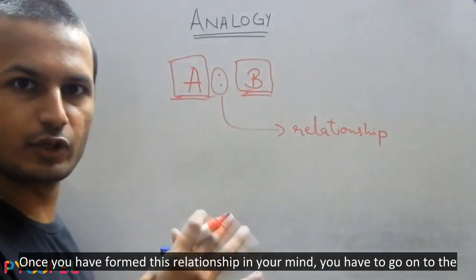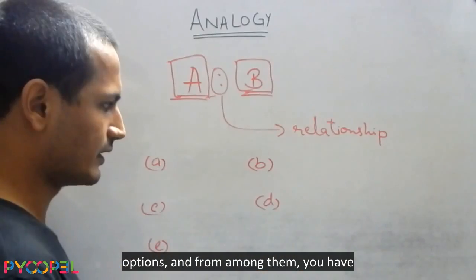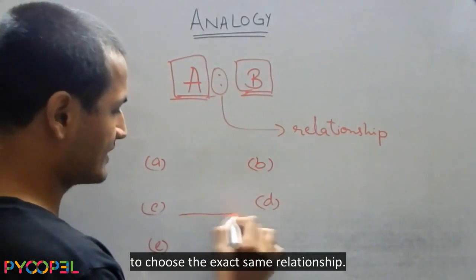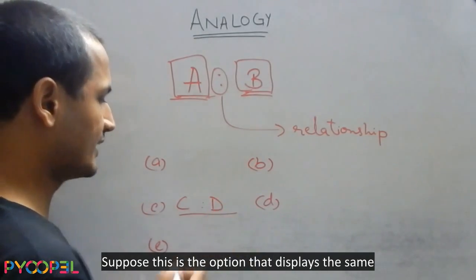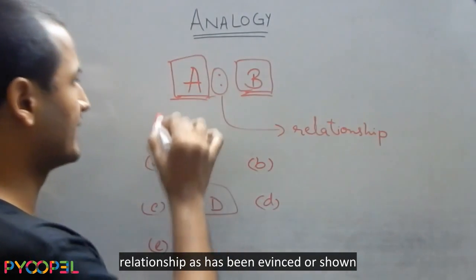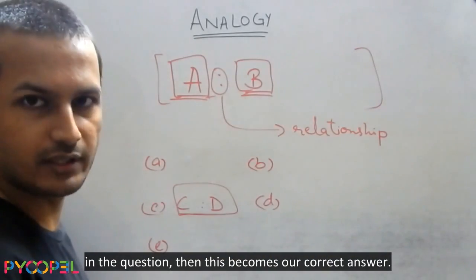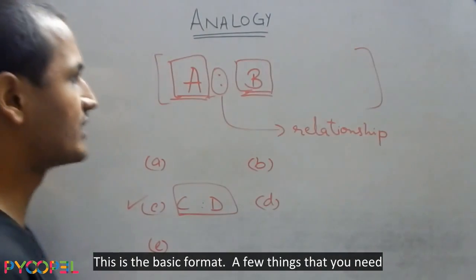Once you form this relationship in your mind, you have to go on to the options and from among them, you have to choose the exact same relationship. Suppose this is the option that displays the same relationship as has been shown in the question, then this becomes our correct answer. This is the basic format.